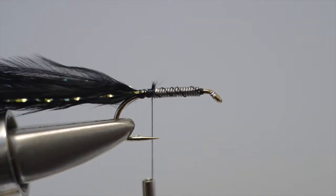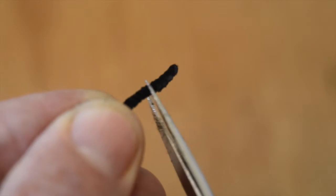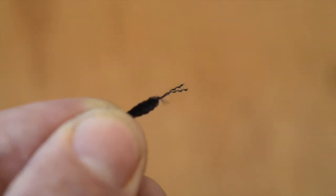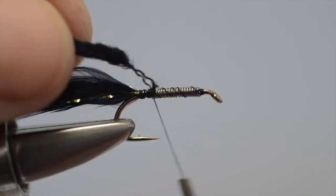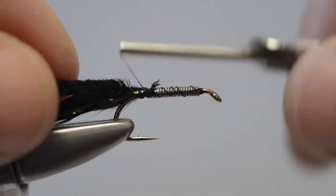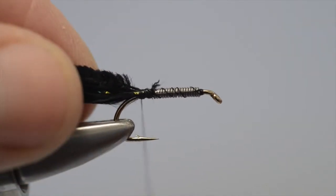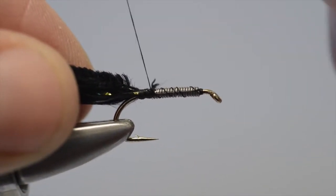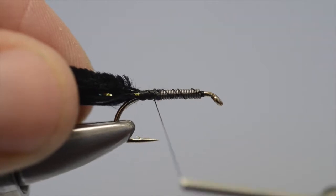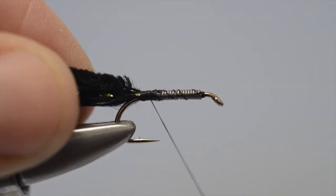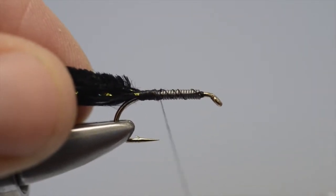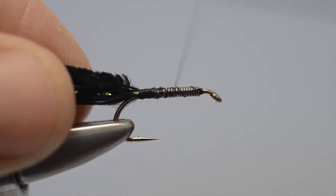The next step is to form the body, which comprises a piece of black chenille. The first thing we do is to take the chenille and remove the fibres from the end, just to leave a little section of core. Bring that up, offer that up to the hook, catch it in, and secure in place. Now this technique of removing the hull means that we don't get too much bulk at the tail, so we just even up the underbody there, and take the thread forward to the eye, or just behind the eye.